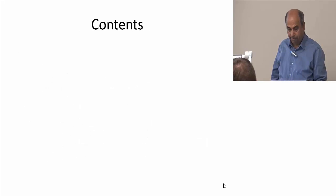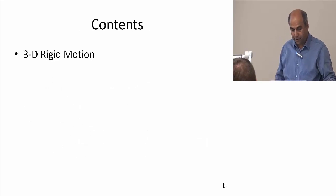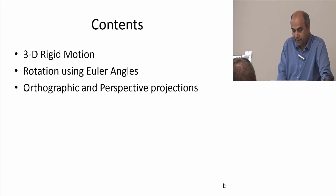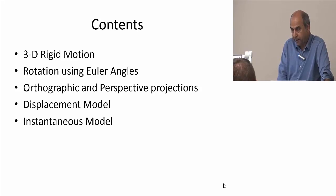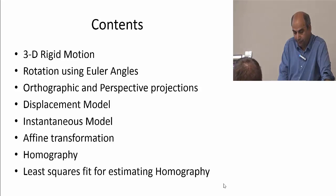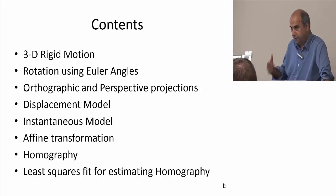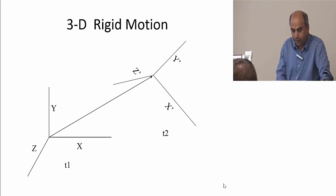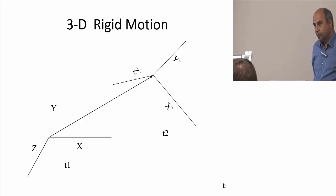In this lecture, we are going to talk about the 3D rigid motion model, covering rotation, translation, rotation matrix using Euler angles, orthographic and perspective projection, displacement and instantaneous models. There are two different transformation models: affine transformation, homography, and least squares fit. These are fundamental concepts. Let's look at 3D rigid motion. If the body is rigid — like a table or a chair — we can model its motion. Humans are non-rigid; a chair is rigid.